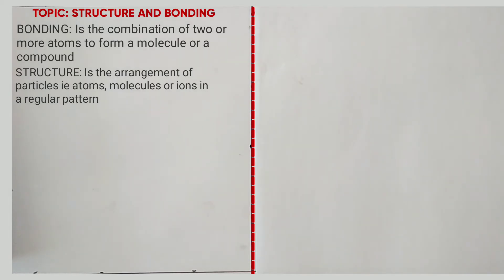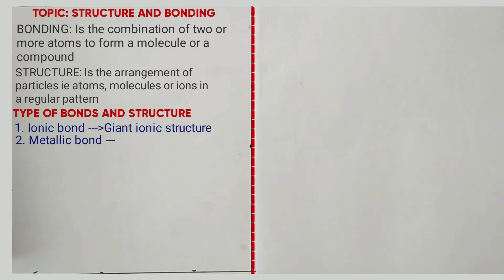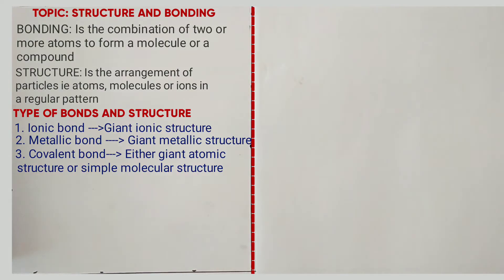Now we have what we call types of bonds and structures. These include ionic bonds, which have a structure called giant ionic structure; metallic bonds, which have a structure called giant metallic structure; and covalent bonds, which have either a giant atomic structure or a simple molecular structure. We begin by looking at metallic bonds.